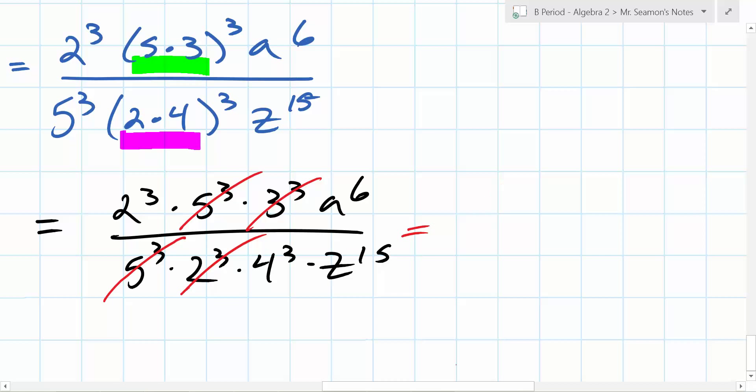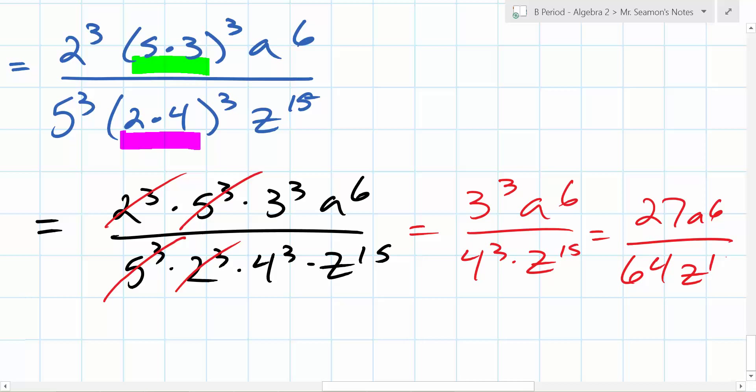So what are you left with? No. Oh, I crossed with the wrong one? Sorry. Bottom by the bottom left. There we go. So what do I end up with? 3 to the 3rd, a to the 6th, over 4 to the 3rd times z to the... Which you could write as if you wanted to. 27 a to the 6th over 64 z to the 15th. Either one of these would be 100% done.